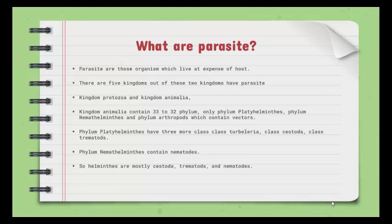On the other hand, kingdom Animalia contains two phyla which completely belong to the parasites: phylum Platyhelminthes and phylum Nemathelminthes. There is also phylum Arthropoda, in which mostly vectors are present. As we know, vectors are those organisms which transmit disease from one organism to another, so the arthropods are approximately vectors.